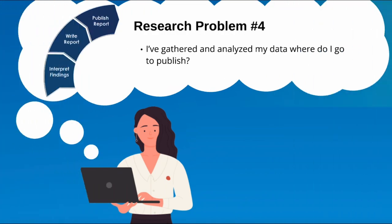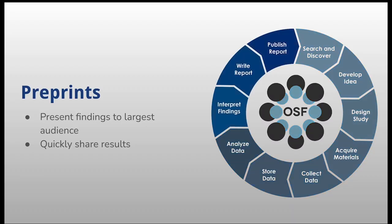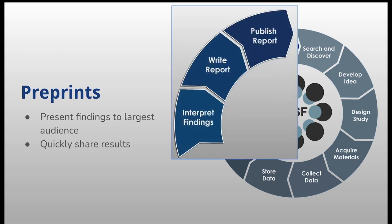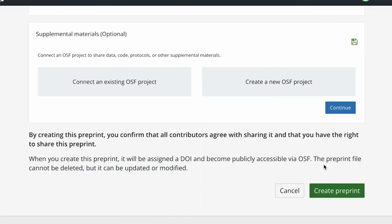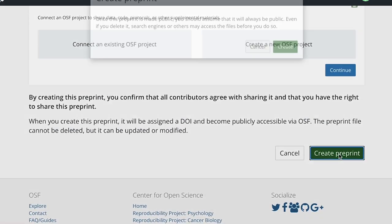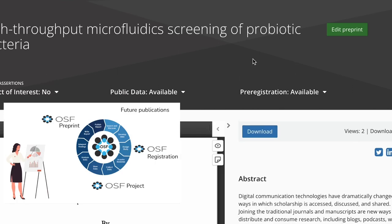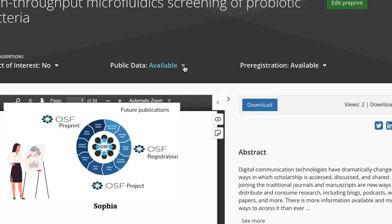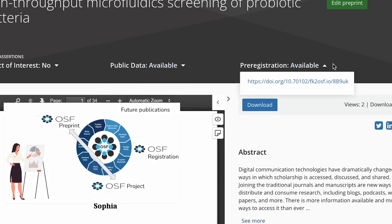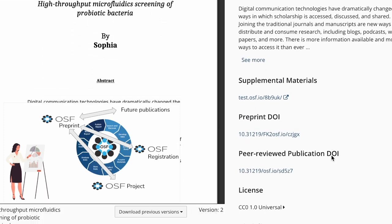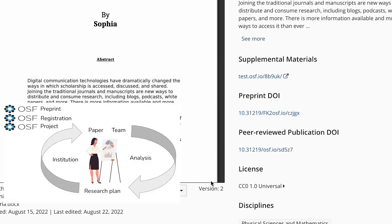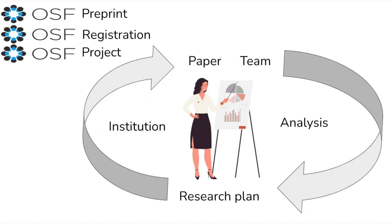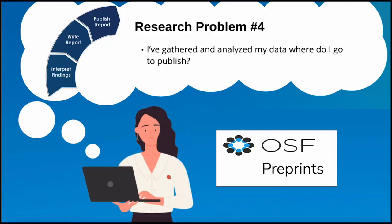Now that Sophia and her team have completed the analysis for their study, she is excited to share her fresh new manuscript with others in her community. Sophia's pre-print receives its own permanent DOI and is indexed by other discovery services on the web. She can update her pre-print at any time to include new information, and all versions are available for readers. Following open science practices, she makes the entirety of the study's life cycle clear by adding links to her OSF project and her pre-registration, as well as links to any subsequent publications. The pre-print reveals the relationship between her paper, her team, her analysis, her research plan, her institution, and herself.